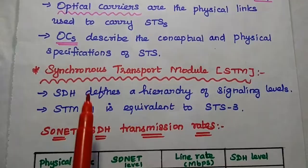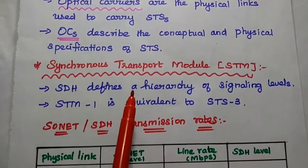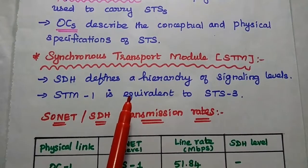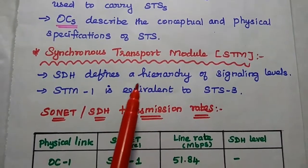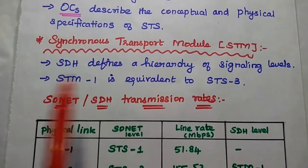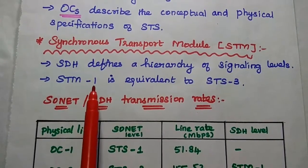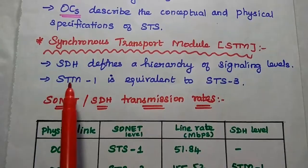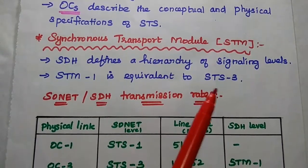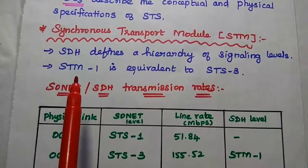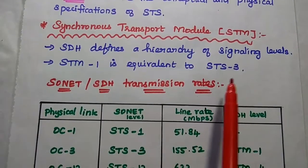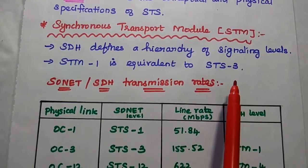In SDH, the Synchronous Transport Module (STM) is used to represent a hierarchy of signaling levels. The first level, STM-1, is equivalent to STS-3 — meaning the first SDH level is equivalent to the third level of the SONET system.